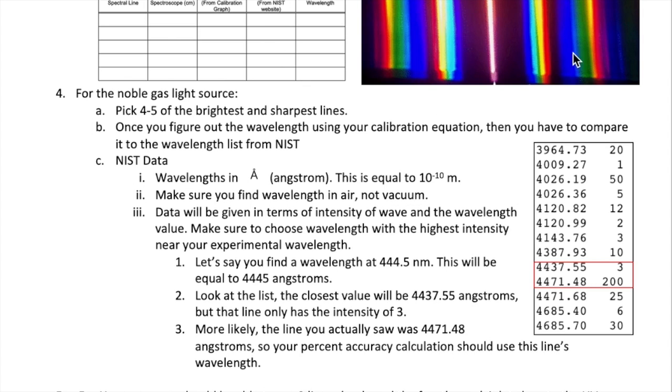Now, once you calculate the actual wavelength of these lines using your conversion equation, you have to find the correct wavelength value. To do this, you're going to consult a table from an organization called the NIST, which is the National Institute of Standards and Technology. The link to get to these values is provided in your lab manual. Some information about the NIST data is given here. The table you will see will look similar to the one shown here.